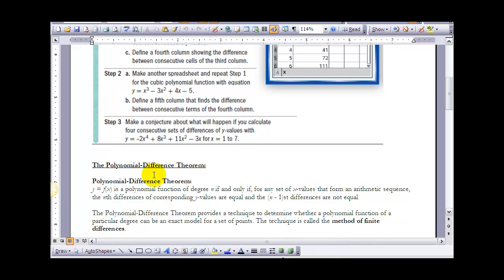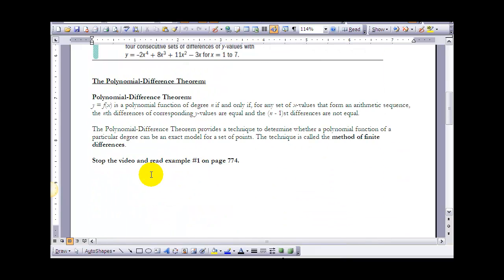And this leads to the polynomial difference theorem. And here's what the polynomial difference theorem says. It says y equals f of x is a polynomial function of degree n, if and only for any set of x values that form an arithmetic sequence, so the x values have to be going up the same amount each time.